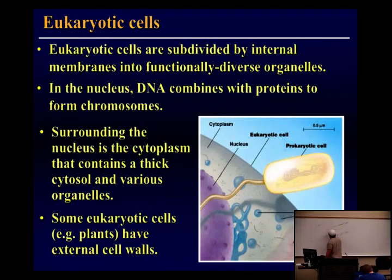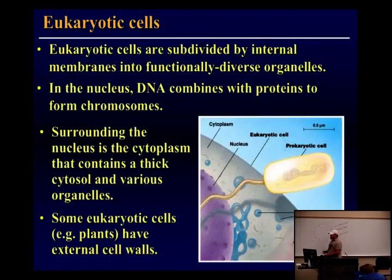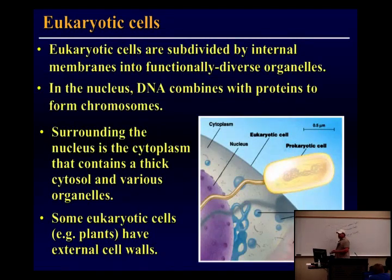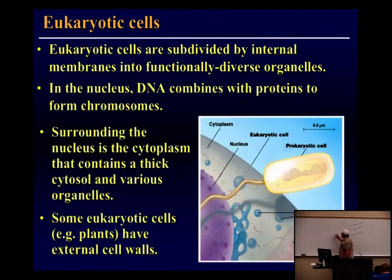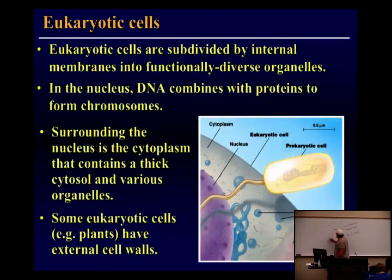All eukaryotes have organelles, one of which is a nucleus. The nucleus houses DNA, which is our instruction set. This membrane is also made up of a phospholipid bilayer. One of the functions of these organelles is that they set up specialized compartments. This one houses DNA; this one is called the lysosome, and it's important for digestion.